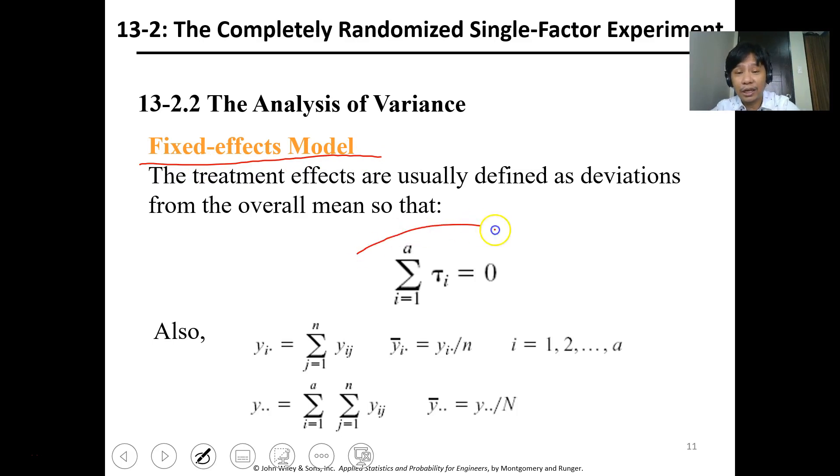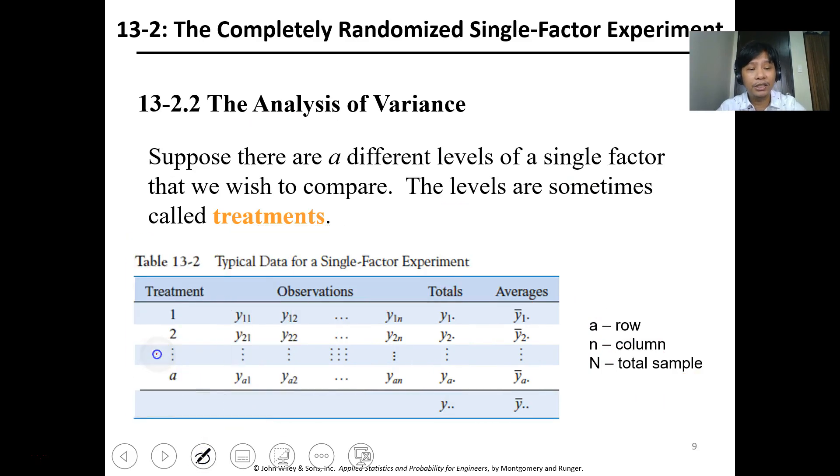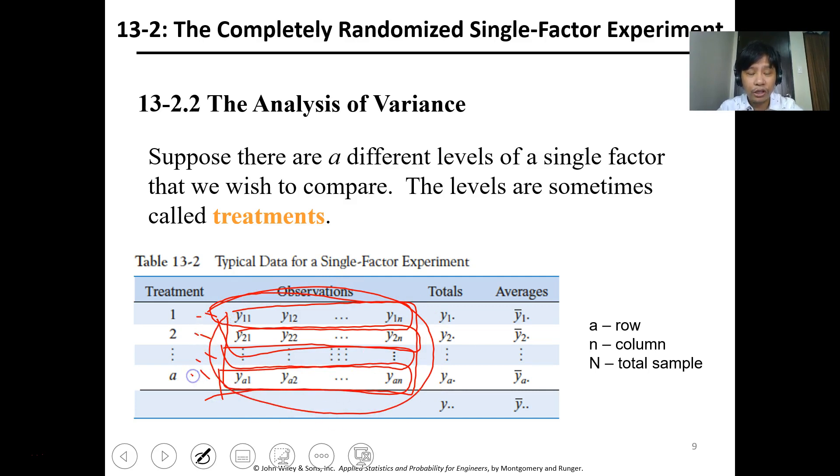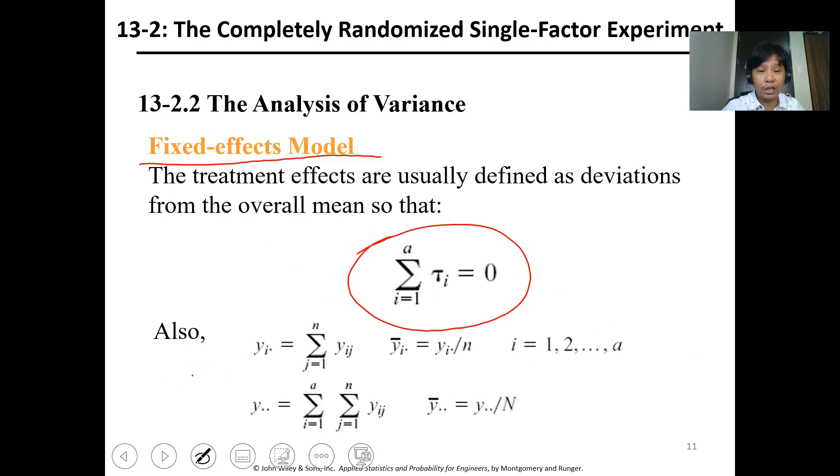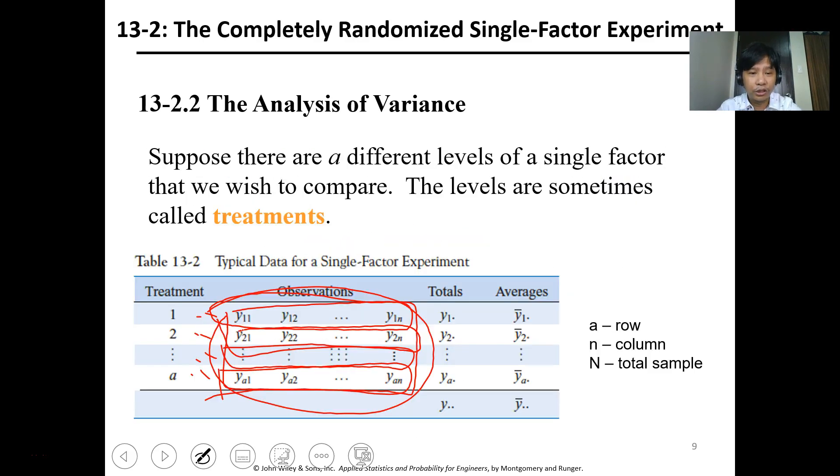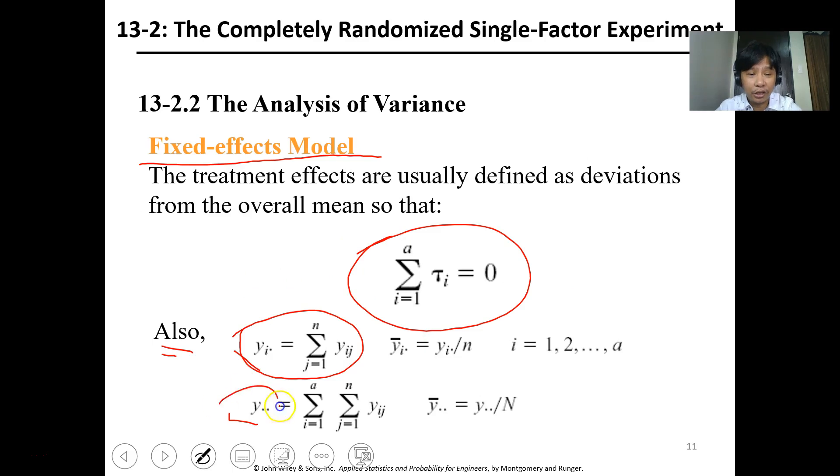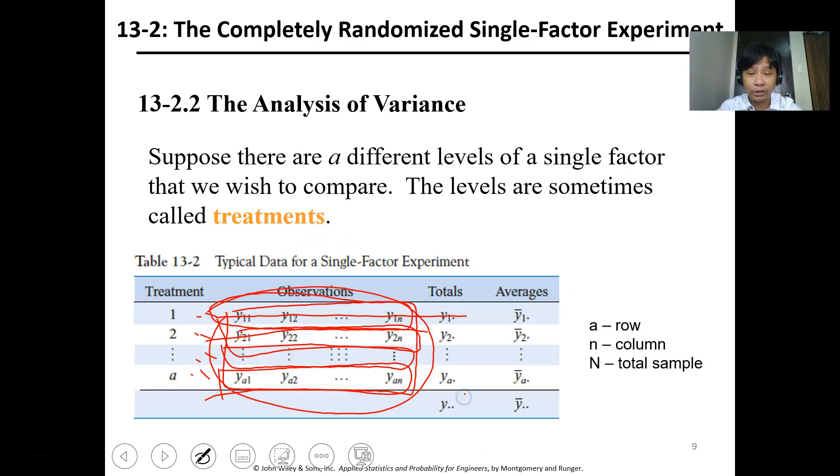The analysis of variance uses the fixed effects model. The treatment effects are usually defined as deviations from the overall mean, so the summation of tau equals zero. Our assumption for analysis of variance is that the variance of all samples can be stated as the same. We can evaluate if the variance of each row deviates from the total variance. You have y_i and y-bar, where y_i is the row sum and y-bar is the sum of totals.